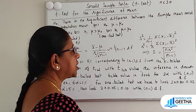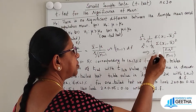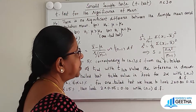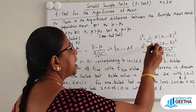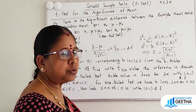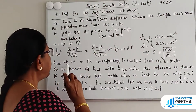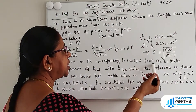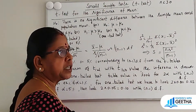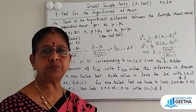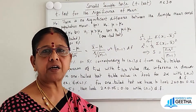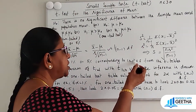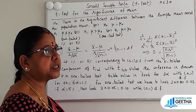This implies capital S can be written as root of N times s squared by N minus 1, or equivalently small s times root of N by N minus 1. The N minus 1 degrees of freedom can be seen from the T tables. Table values for N minus 1 degrees of freedom can be obtained from the T tables.